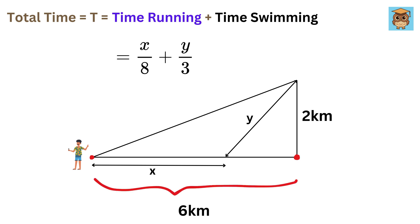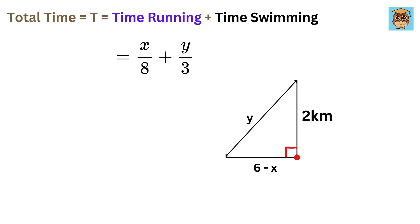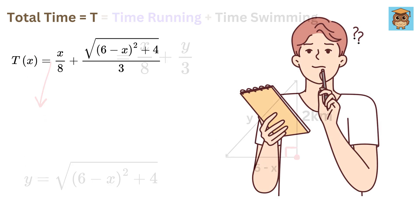If this is X, then this is 6 minus X, and therefore we can find the value of Y in terms of X, because Y forms the hypotenuse of this right triangle. So we have Y squared equals 2 squared plus 6 minus X whole squared. Thus, Y equals this. This way, the total time becomes a function of only one variable, which is X.